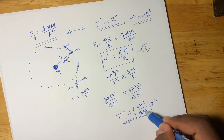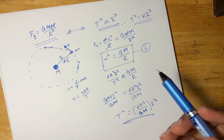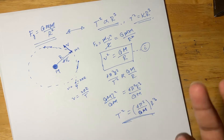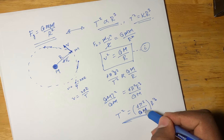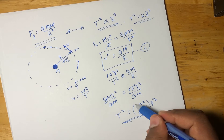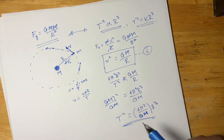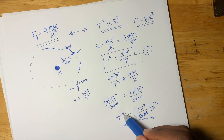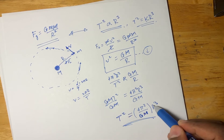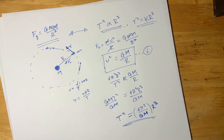This equation works well in classical physics. Note that in relativity, mass can vary depending on speed, but in classical physics, mass is constant. So we have just qualitatively proved that the period of the satellite squared is directly proportional to the radius of the satellite's orbit cubed.